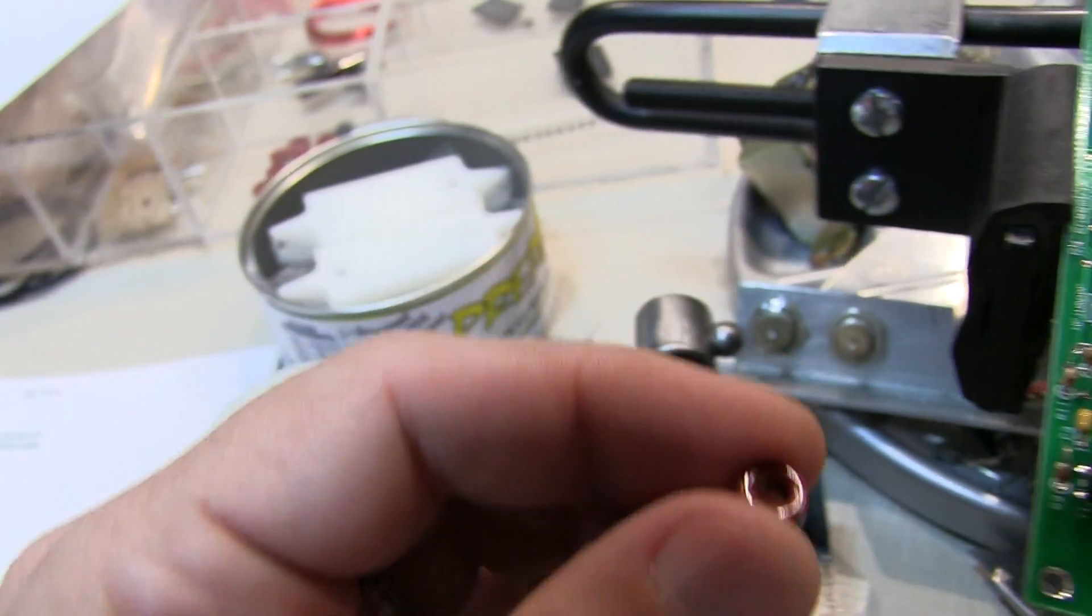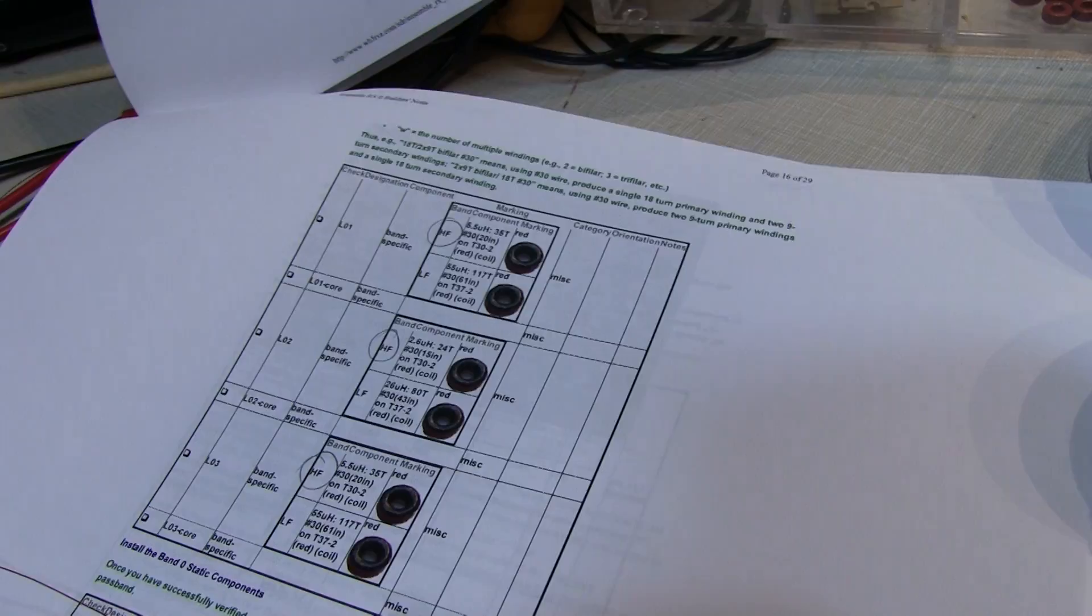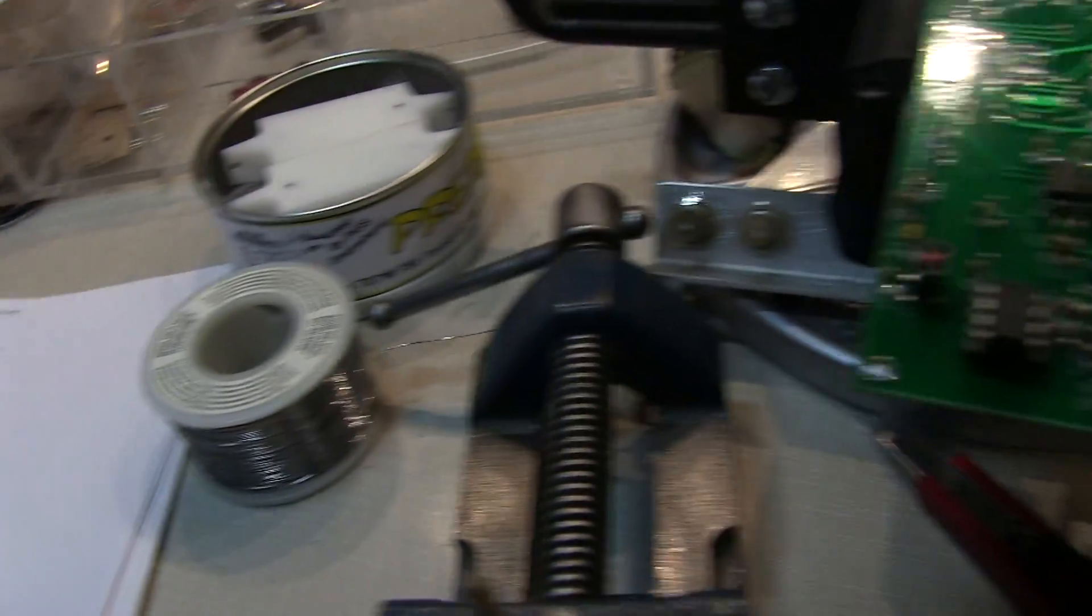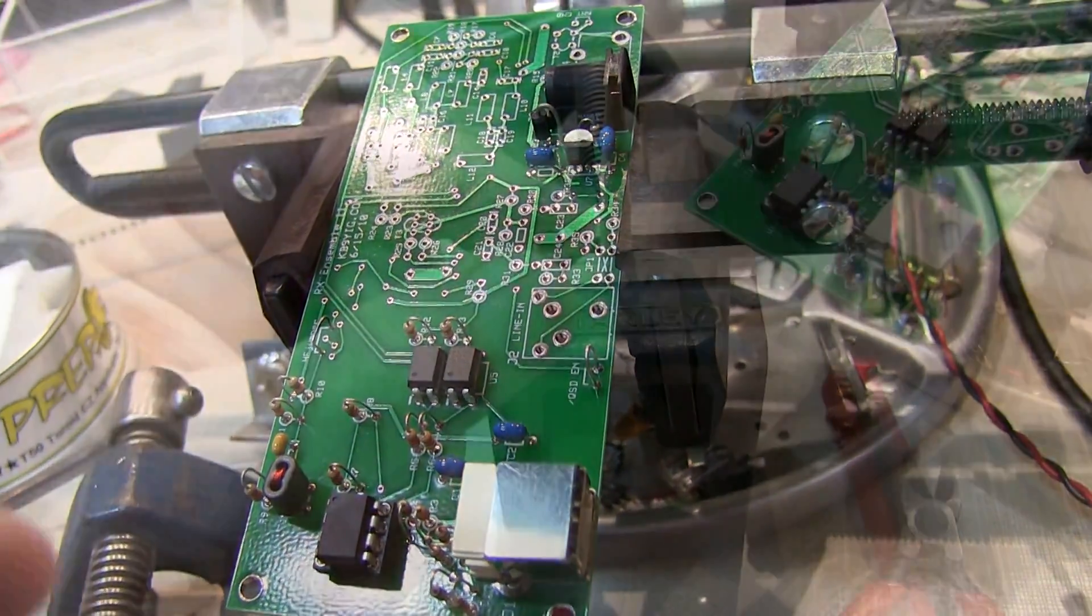So we're just going to wind one of the toroids that is listed here in the assembly instructions for this Ensemble 2 software defined receiver.